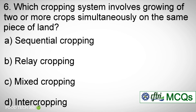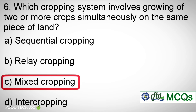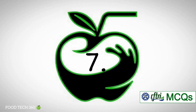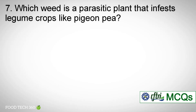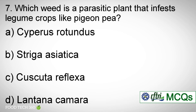Question number seven: Which weed is a parasitic plant that infests legume crops like pigeon pea? Options: a) Cyperus rotundus. b) Striga asiatica. c) Cuscuta reflexa. d) Lantana camara. Correct answer: c) Cuscuta reflexa.